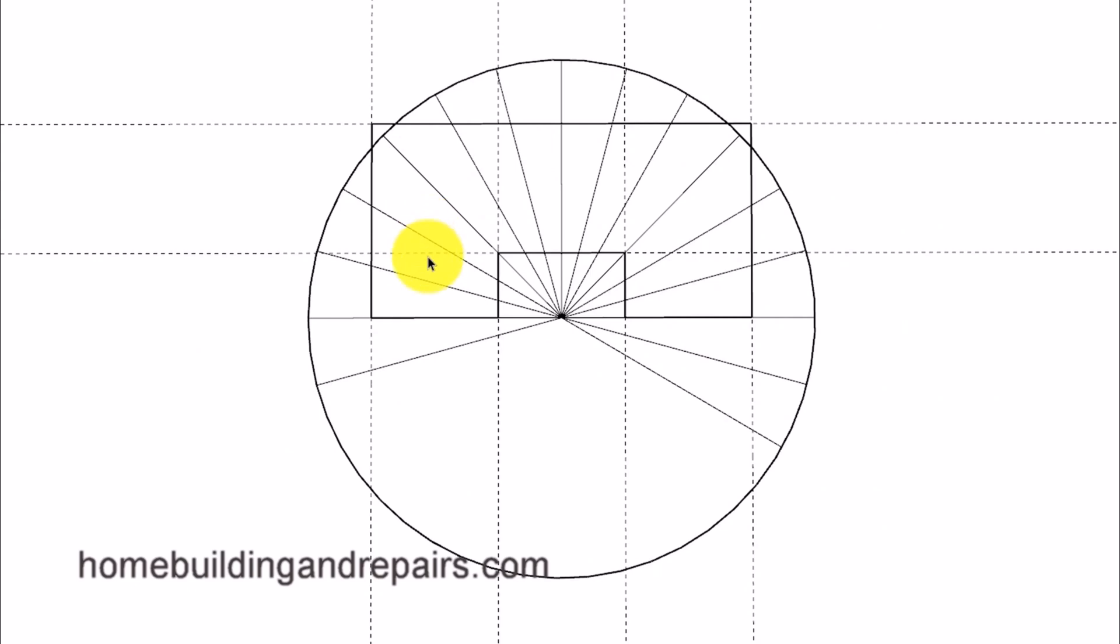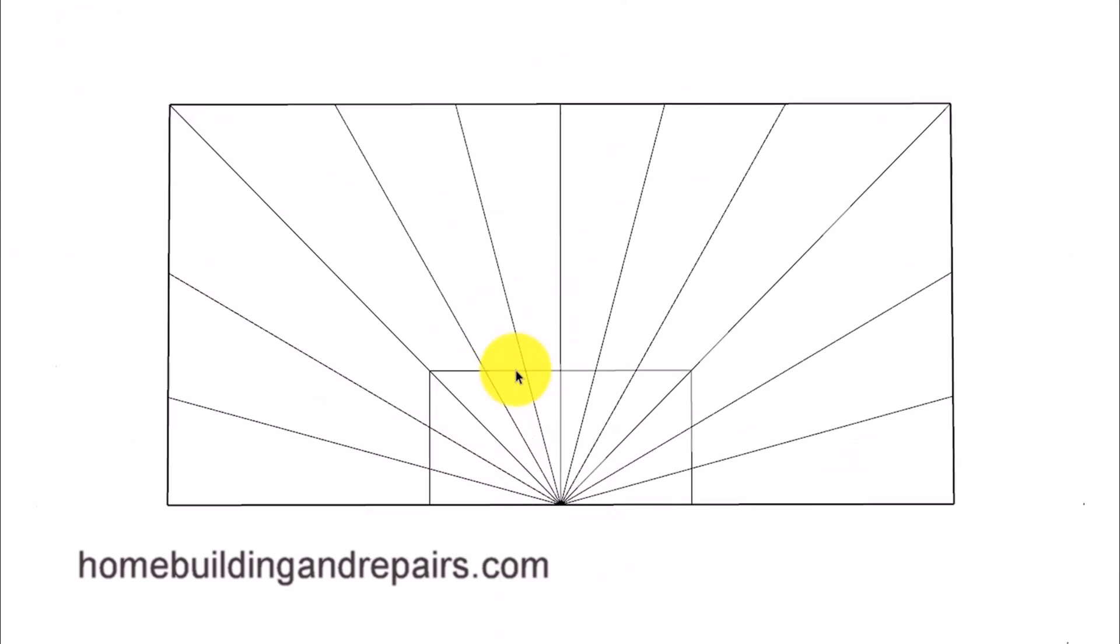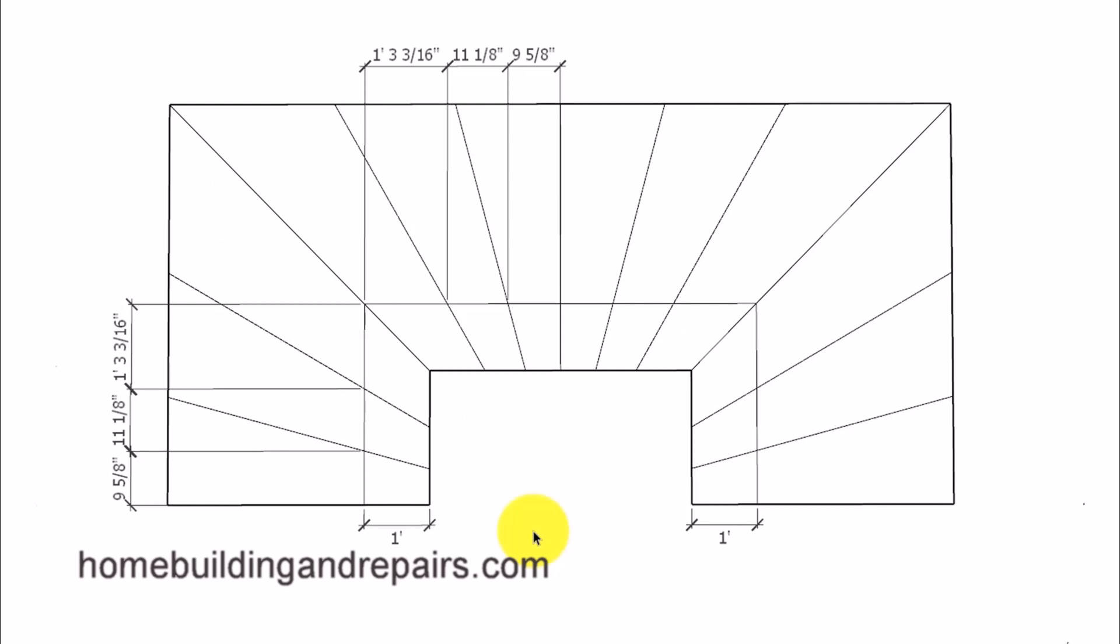This is almost identical to the example the individual was trying to figure out. In most cases when you have a shape like this it will be difficult to create a walk line using a concentric circle from the center point when the building codes are asking for a walk line that runs parallel to the inside of the stairway and producing different measurements.